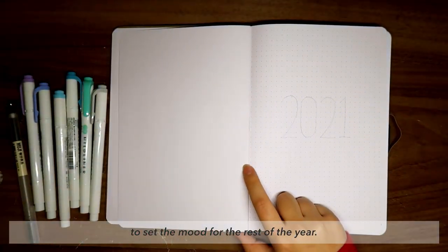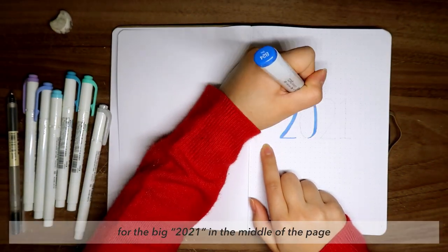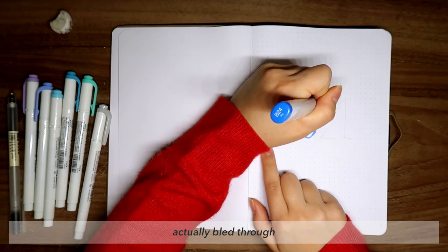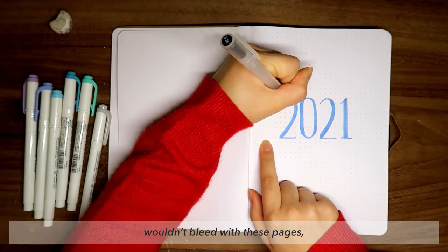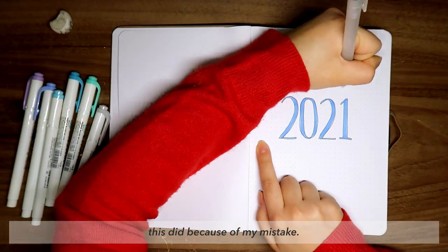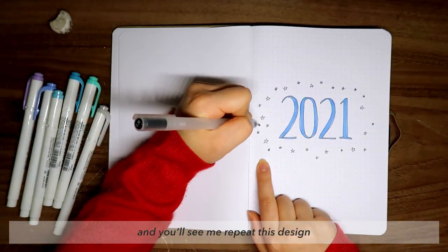I thought it would give a nice keep your head up, anything is possible vibe to set the mood for the rest of the year. Quick note: this blue marker that I'm using for the big 2021 in the middle of the page actually bled through because I didn't realize it was basically a Sharpie. So even though anything else wouldn't bleed with these pages, this did because of my mistake. But regardless, I added a ton of stars and little dots and sparkles around the center.